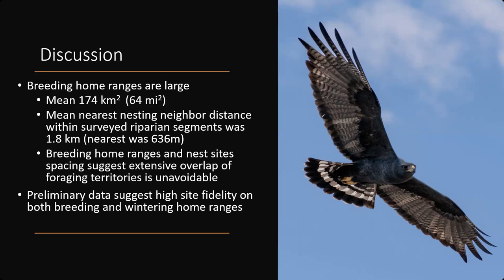To wrap up: mean breeding season home ranges were about 64 square miles — really large for a raptor of this size. Mean nearest neighbor distance for Zone-tailed Hawks was 1.8 kilometers, with some nesting as close as 636 meters. I interpret this like seabirds nesting on a rocky island — there's nowhere to nest except that island, so you put up with each other being very close, but then you have the whole ocean to forage over. These Zone-tailed Hawks have little islands of cottonwood groves to nest in, then forage out over the vast Chihuahuan Desert.